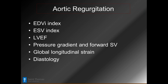AR can be extraordinarily hard to evaluate by echo unless it's obviously severe. Moderate patients can be very difficult to measure. If we know the end diastolic volume, the index, and the EF, we have hard numbers from STS data that indicate we need to watch these people more closely. We want to look at the pressure gradient across the valve, forward stroke volume (which becomes higher with greater regurgitation), global longitudinal strain (which will slowly decrease as wall pressure increases from AR and pressure loading), and diastology.